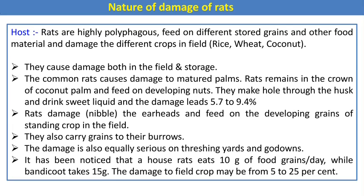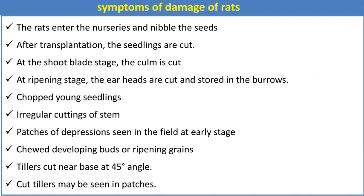A house rat eats 10 grams of food grains per day while a bandicoot takes 15 grams. Damage to field crops varies from 5 to 25%. Symptoms include: rats entering nursery and nibbling seeds; seedlings cut after transplantation; germ cut at shoot blade stage; ear heads cut and stored in burrows at ripening stage; irregular cutting of stems; patches of depression in fields at early stage; chewing of developing buds or ripening grains; tillers cut near base at 45-degree angles; and cut tillers seen in patches.